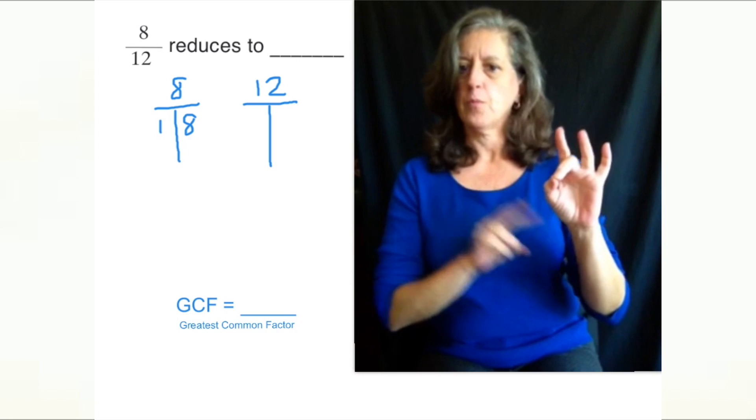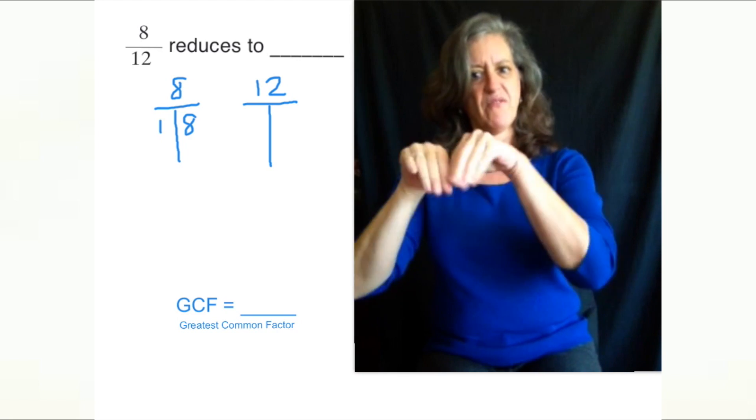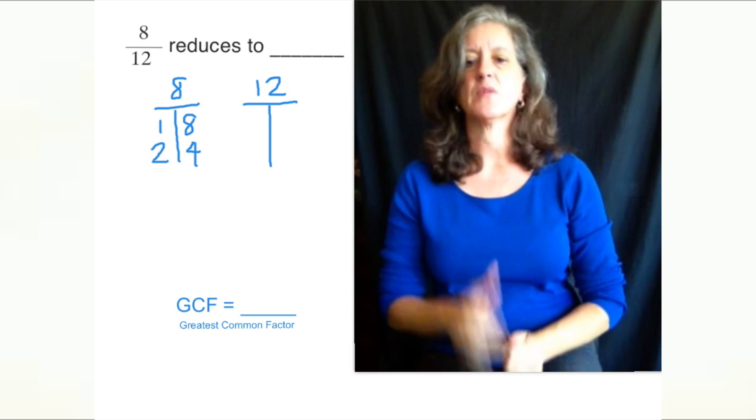Then 2 times 4 equals 8. So you put down 2 and 4 because they are factors of 8.